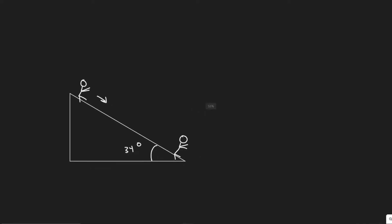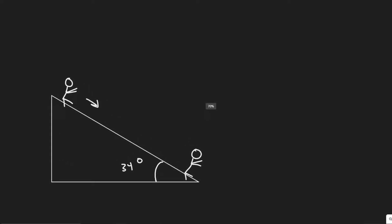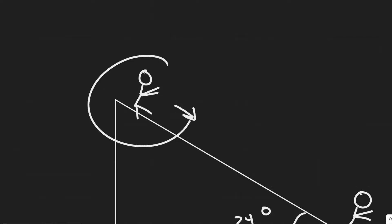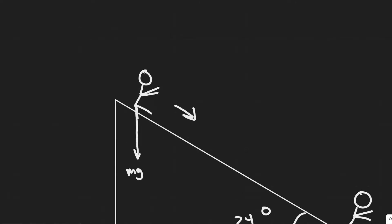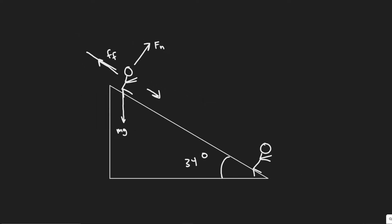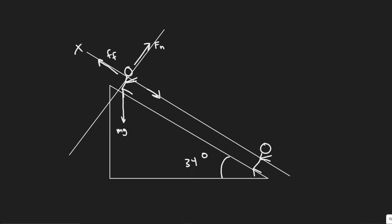So I went ahead and drew what we have going on here — a child going down a slide at 34 degrees. When doing problems like this, you want to treat everything parallel to the incline as the x-axis, and everything perpendicular to the incline as the y-axis.